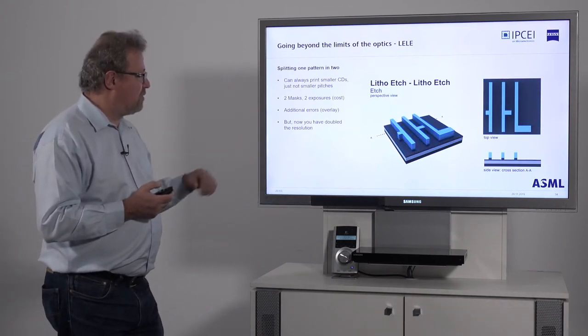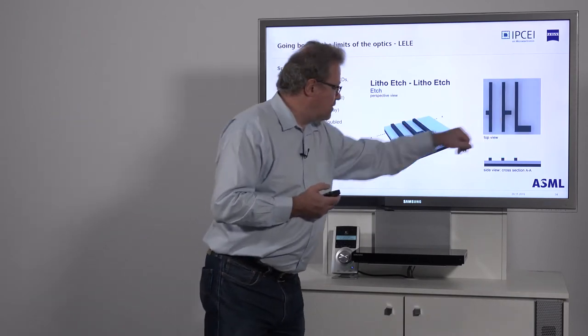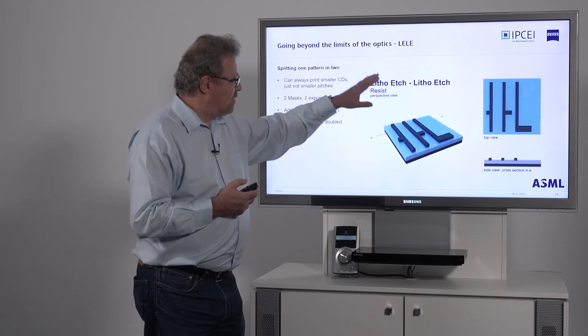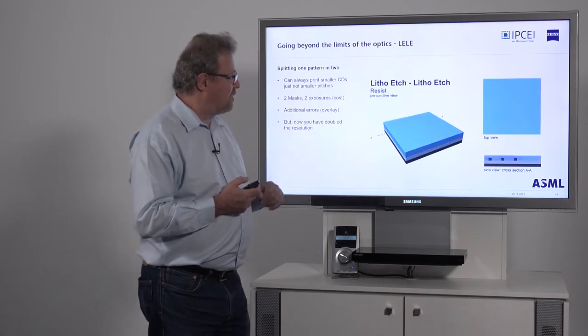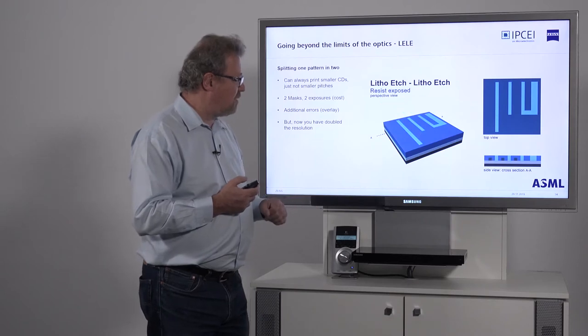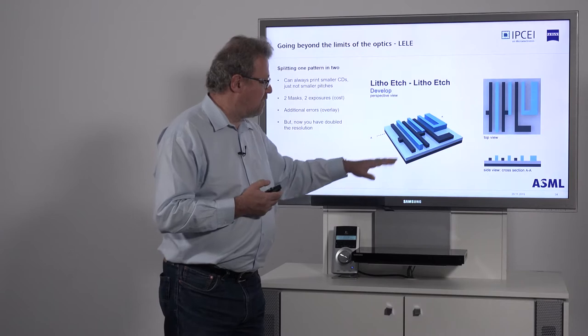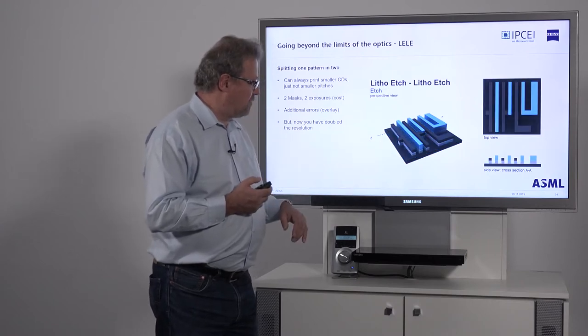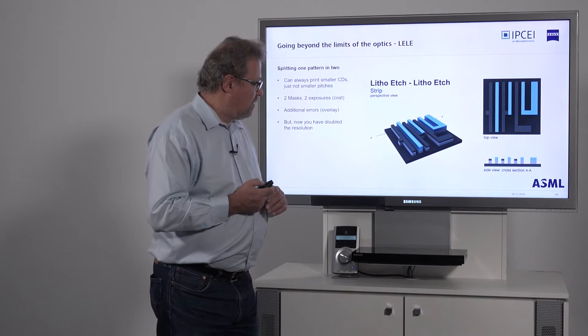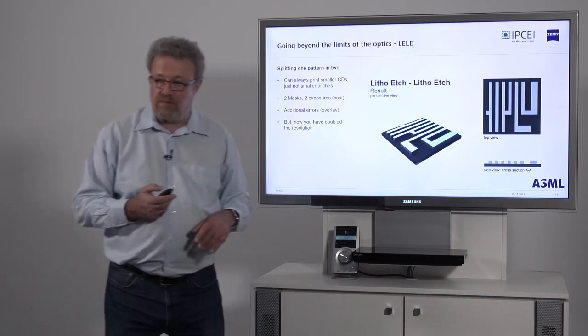You develop, you etch, and now you see here a top view. This is what you get. Now you put photoresist on top of it again. You expose the other half in between. That also you can resolve. It sits in between. Now you etch it into your hard mask here. And then you have a feature that has twice the pitch.